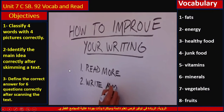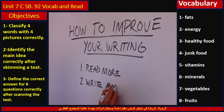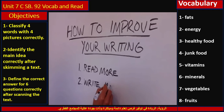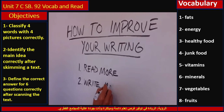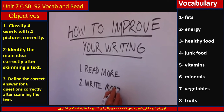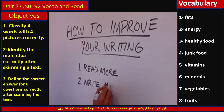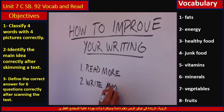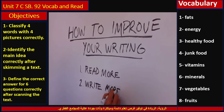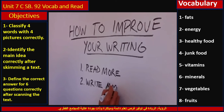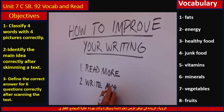Today, inshallah, we are going to study Unit 7C — a unit on speech, vocabulary, and reading. Our objectives for today are: one, classify four words with four pictures correctly; two, identify the main idea correctly after skimming a text; three, define and answer six questions correctly after scanning the text — and I will cover each of these in detail.